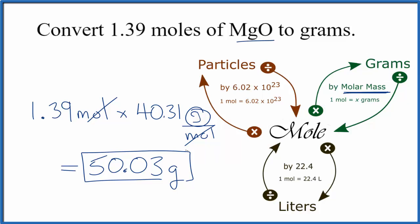If we were given grams of MgO and we wanted to convert to moles, we'd do the opposite. We'd take our grams, divide by the molar mass, and that would give us moles.